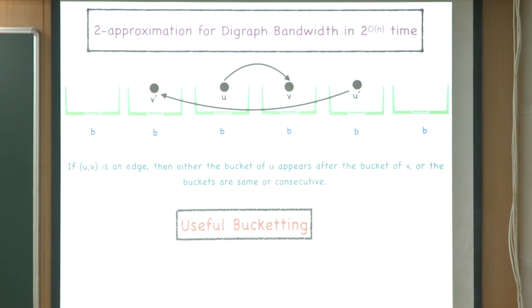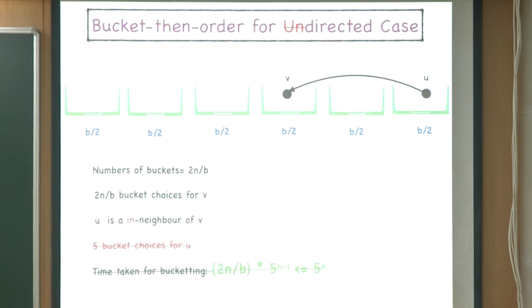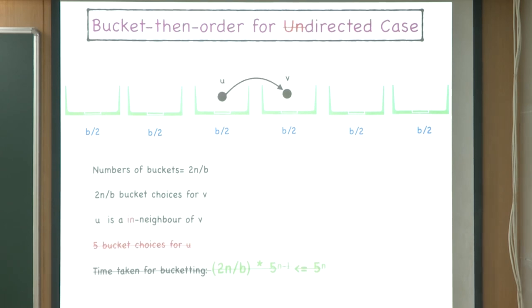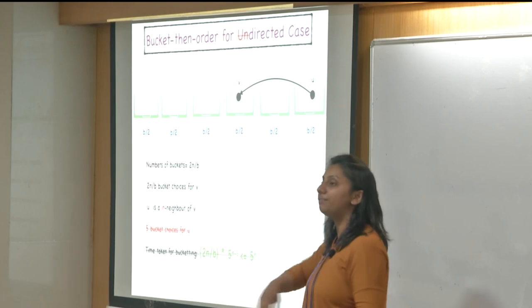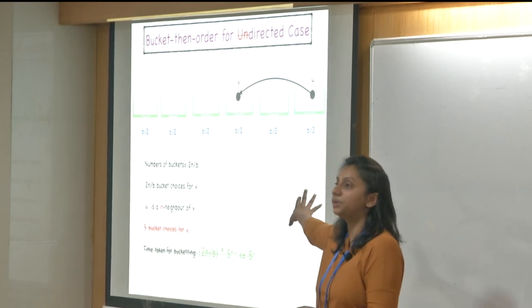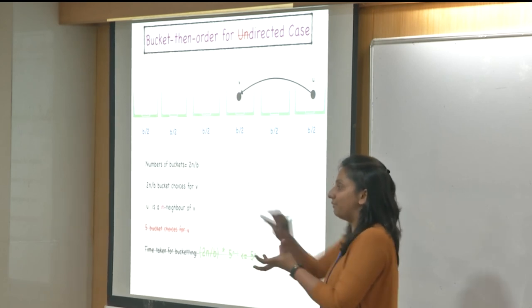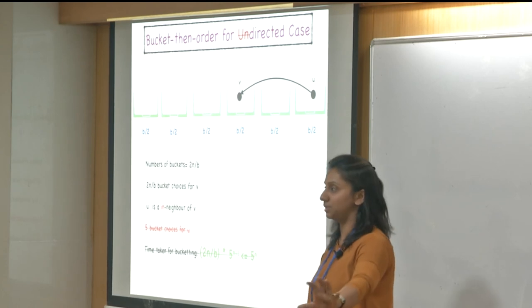To find a useful bucketing, the key insight is: the bucketing phase failed for directed graphs because we didn't know which vertices would be backward arcs. If we had information about which edges are backward arcs, we could execute the bucketing phase easily. It turns out that even partial information about backward arcs at various points is enough to achieve a single exponential algorithm, at the cost of approximation.